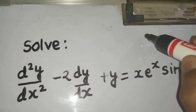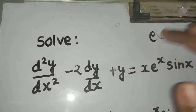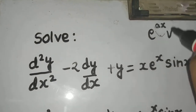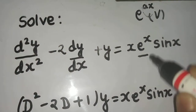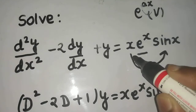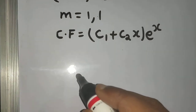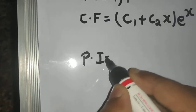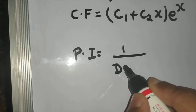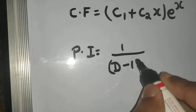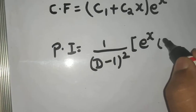We have a rule for expressions of the form e^(ax)·v, where v is any function of x. Here, we can write the right-hand side as eˣ·(x sin x). So the particular integral is 1/(D-1)² operating on eˣ·(x sin x).